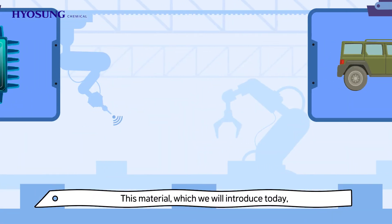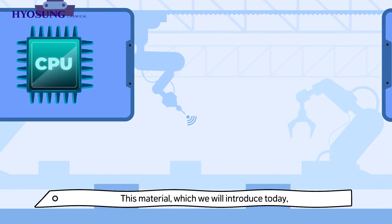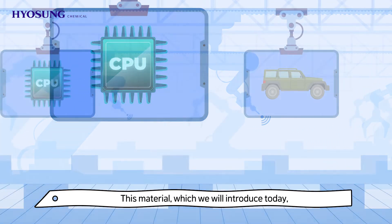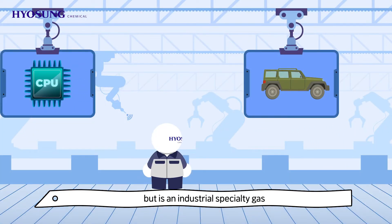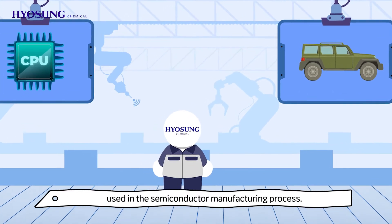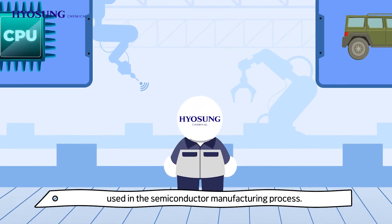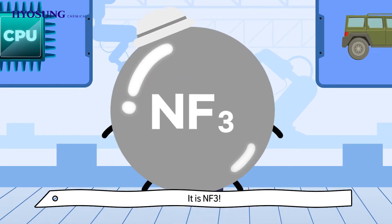This material, which we will introduce today, cannot be seen with our bare eyes, but is an industrial specialty gas used in the semiconductor manufacturing process. It is NF3.